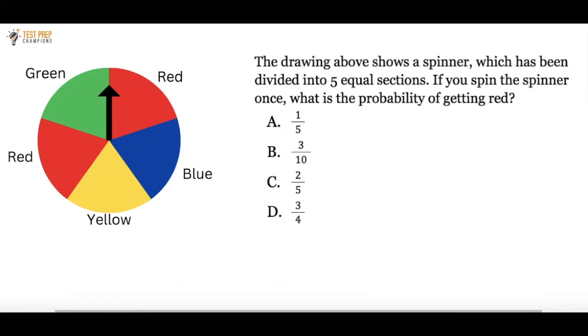The drawing above shows a spinner which has been divided into five equal sections. If you spin the spinner once, what is the probability of getting red?